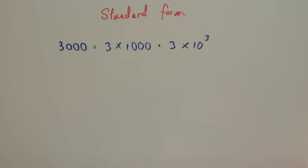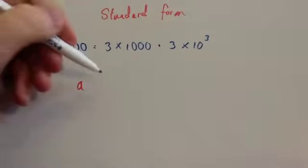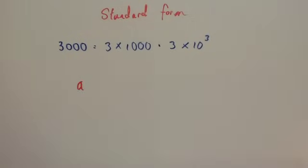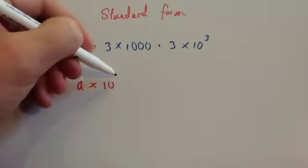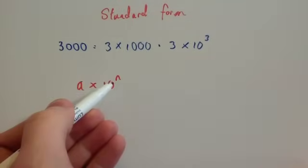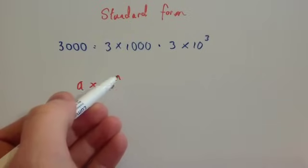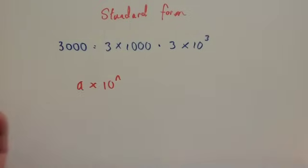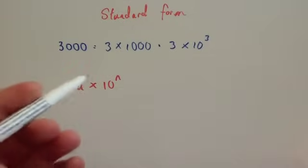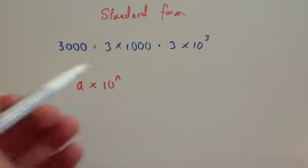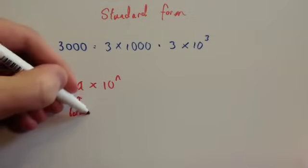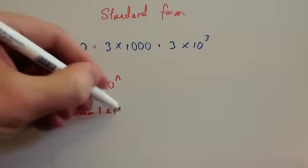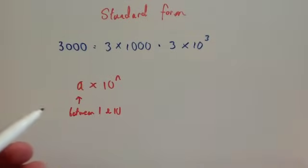If you've got a number in standard form, it has a number at the front between 1 and 10 — it's going to be less than 10 — and then times 10 to the power of a certain number. This number is going to be an integer, so it's either going to be a positive number or a negative number. You tend not to use it whenever it's zero. So this would be a number in standard form, where this has got to be between 1 and 10, but it obviously can't be 10.